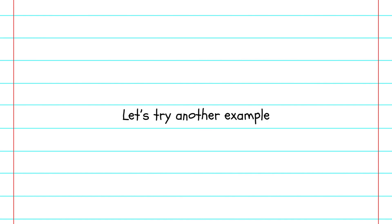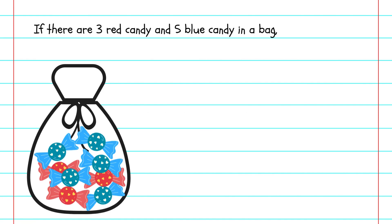Let's try another example. If there are three red candy and five blue candy in a bag, the ratio of red candy to blue candy can be written as 3:5.